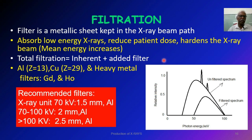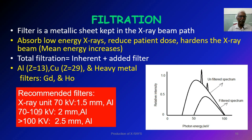The materials used as filters include aluminium (atomic number 13) and copper (atomic number 29). K-edge metal filters such as gadolinium and holmium are also used as filters in diagnostic radiology. The recommended filters for X-ray tubes are: for operation below 70 kV, the minimum total filtration required is 1.5 mm aluminium. For operation between 70 and 100 kV, the total filter required is 2 mm aluminium. For operation above 100 kV, the required filter is 2.5 mm aluminium thickness.